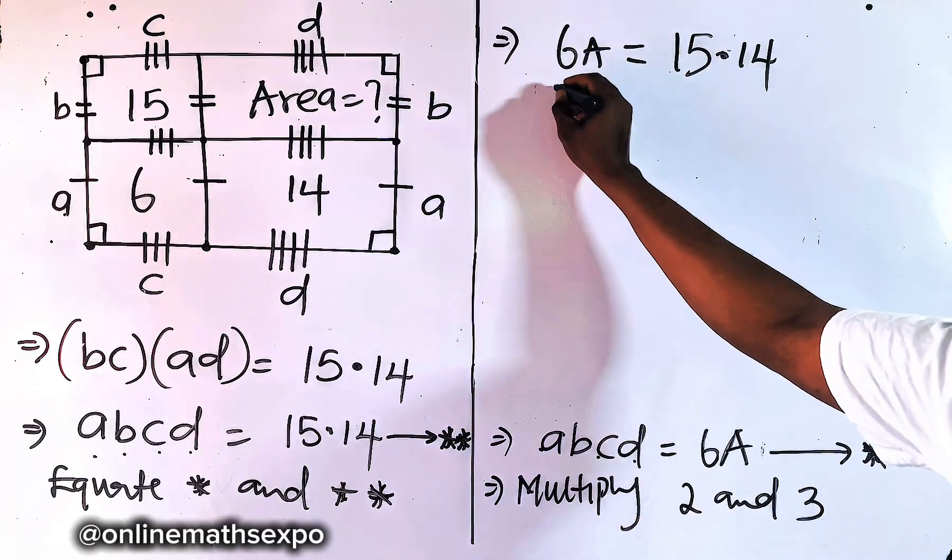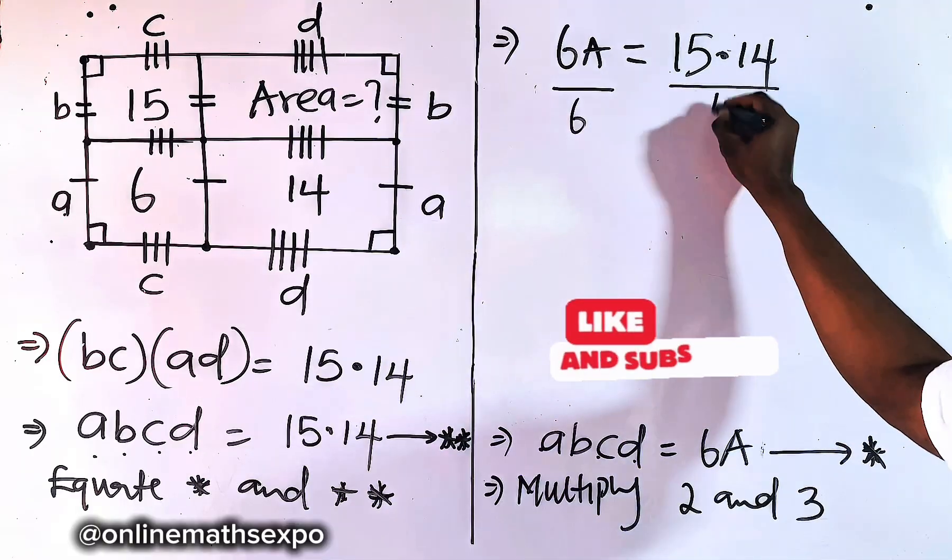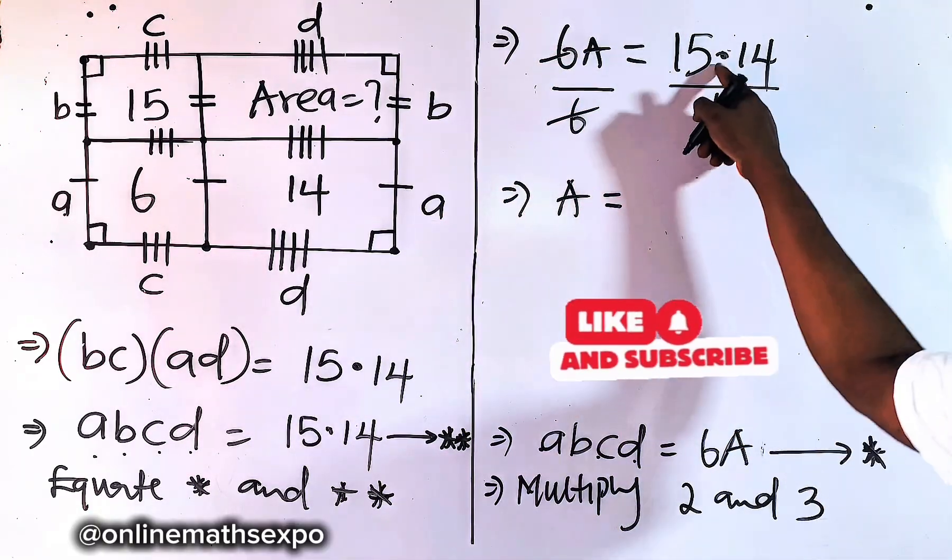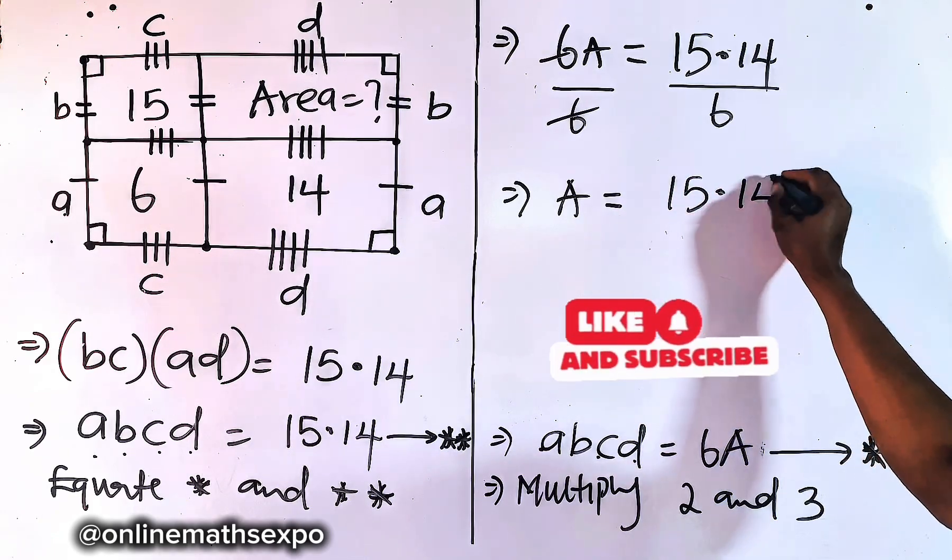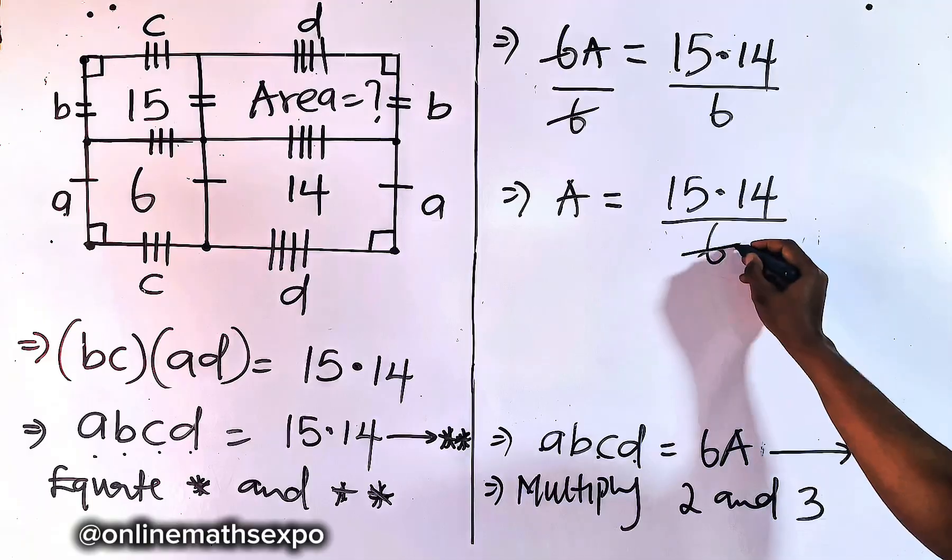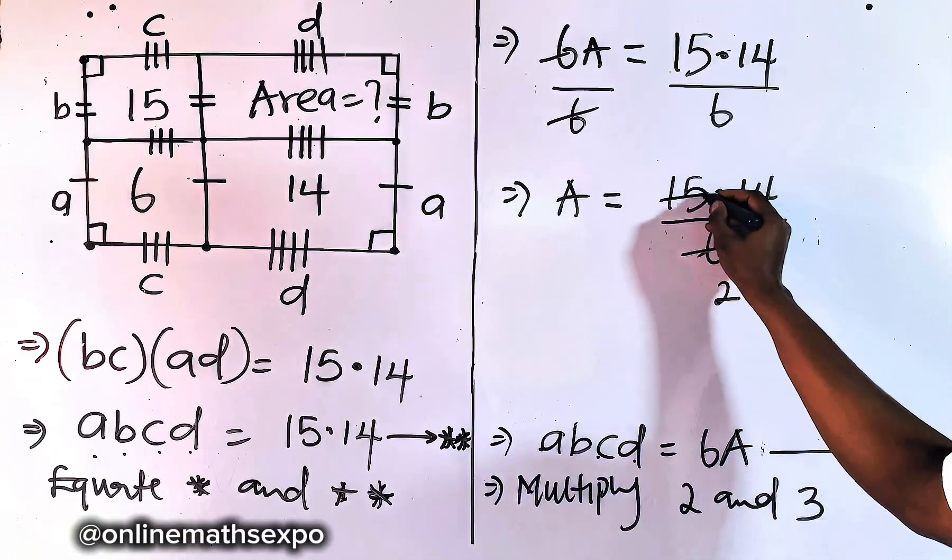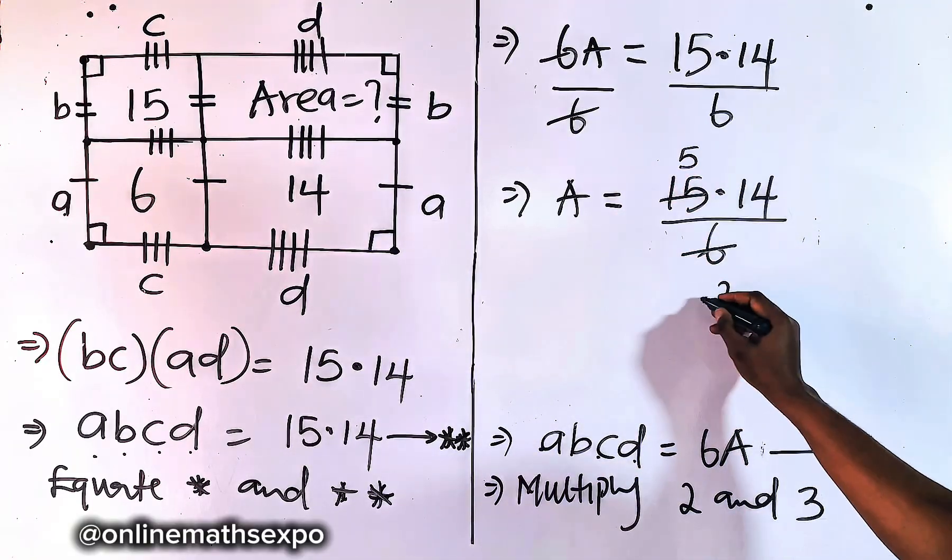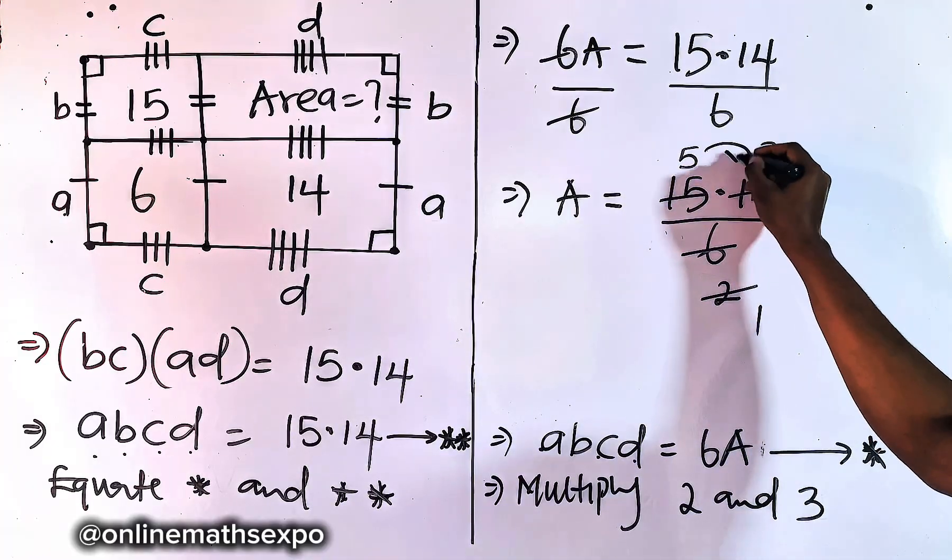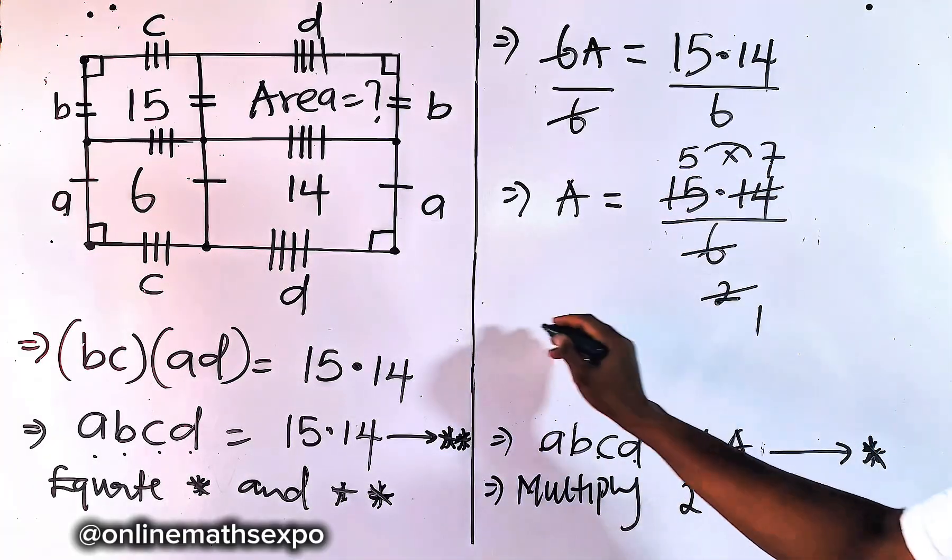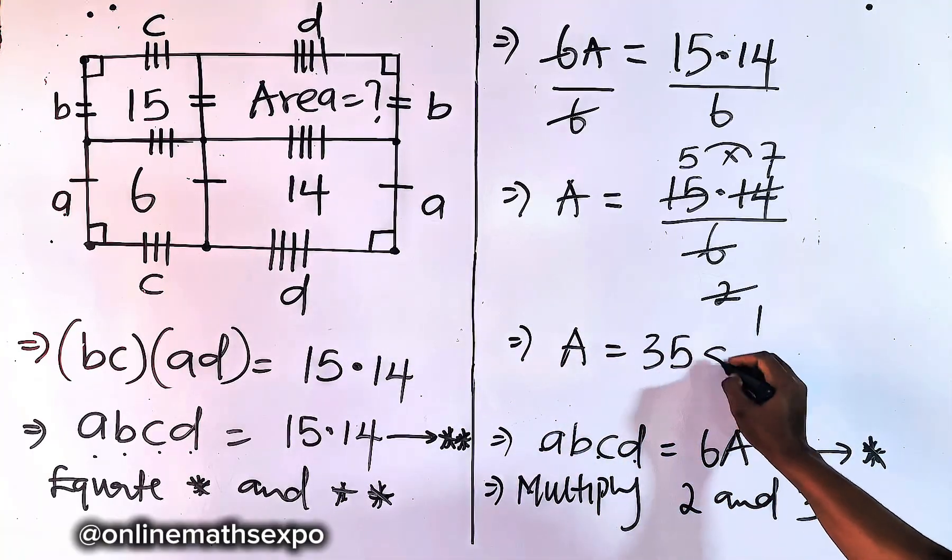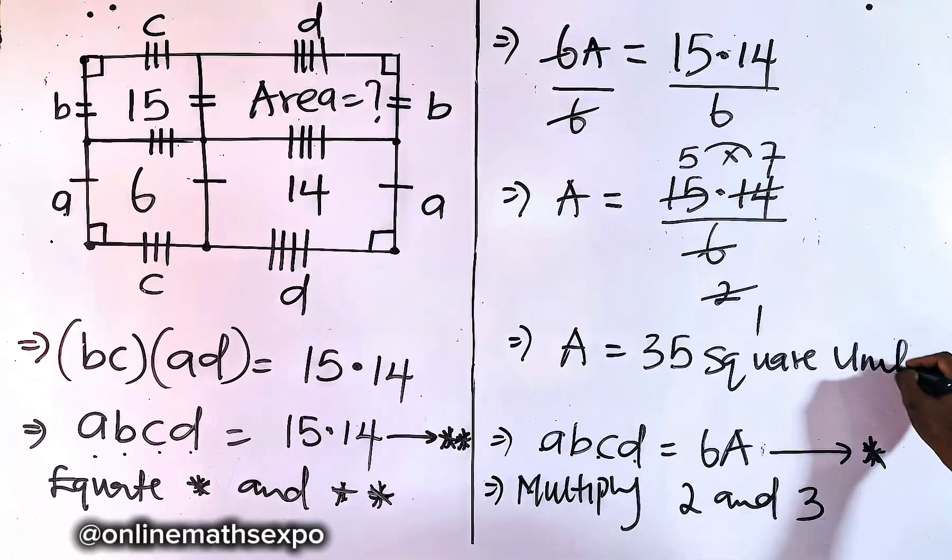At this point, we want to find A, so we are going to divide by 6. So this takes off this, so we have area is equal to 15 multiplied by 14 divided by 6. So we can use 3 here, we give us 2. 3 here, we give us 5. 2 here is 1. 2 here is 7. So we multiply these two, and 5 multiplies 7, gives us 35. So the area is 35 square units.